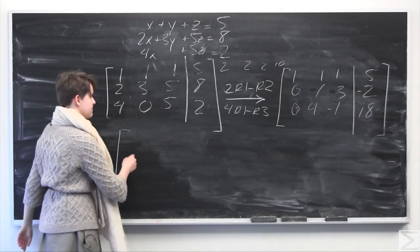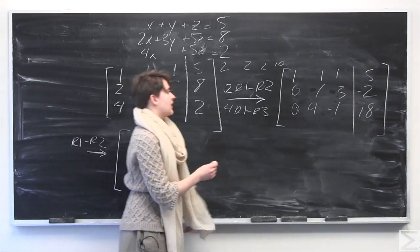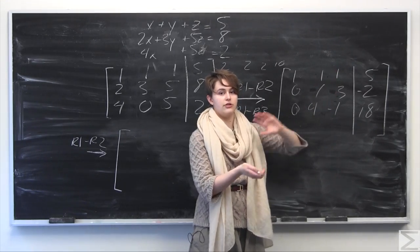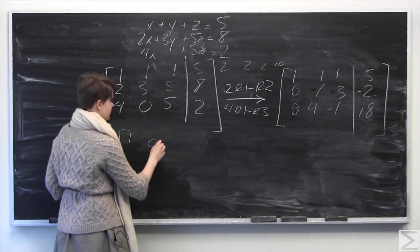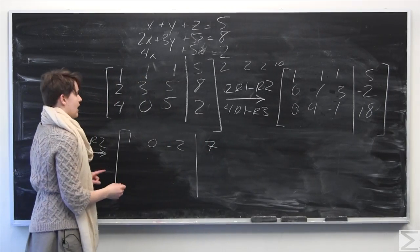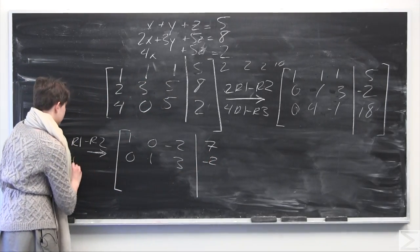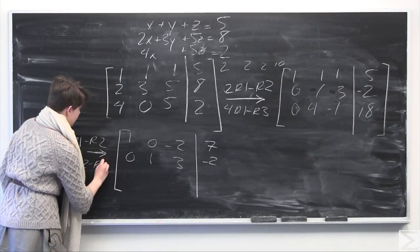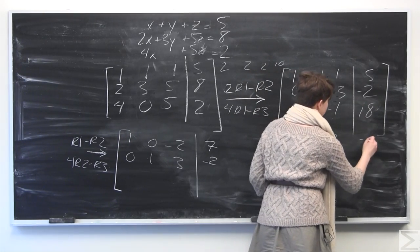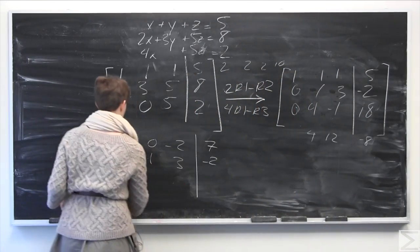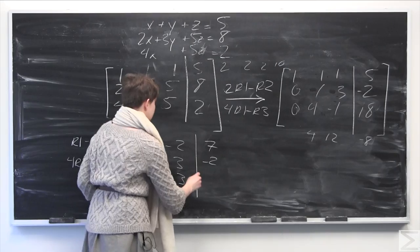I'll do this in one step. I'm going to do row one minus row two in order to clear out the one in the first row's second column, because with a leading one in the second column there can be no other non-zero numbers in that column. Row one minus row two gives: one, one minus one is zero, one minus three is negative two, and five minus negative two is seven. Row two stays the same: zero, one, three, negative two. I'll replace the third row with four times row two minus row three. Four times row two is zero, four, twelve, negative eight. Subtracting row three: zero, four minus four is zero, twelve minus negative one is thirteen, and negative eight minus eighteen is negative twenty-six.